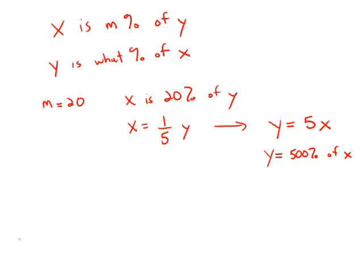So let's just go through the answer choices and see the only one where if I plug in m equals 20, I get 500 is 10,000 over m, and this is answer choice E.